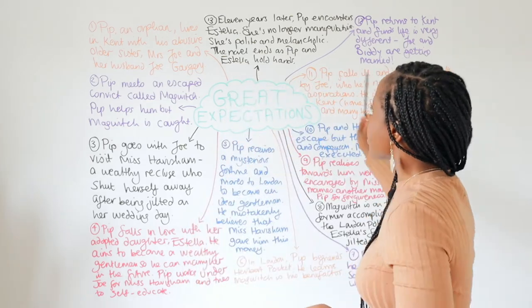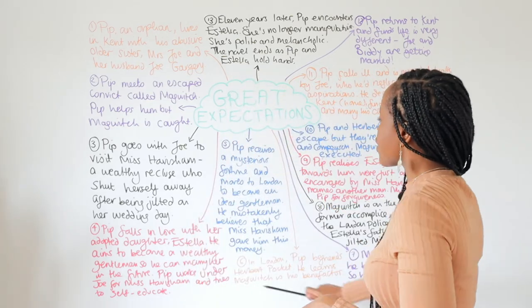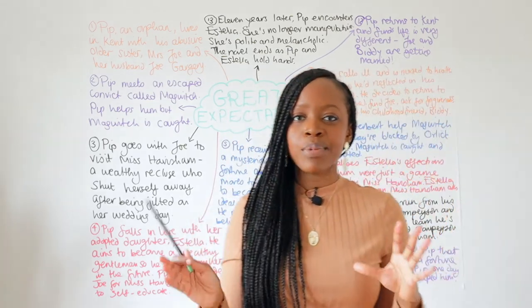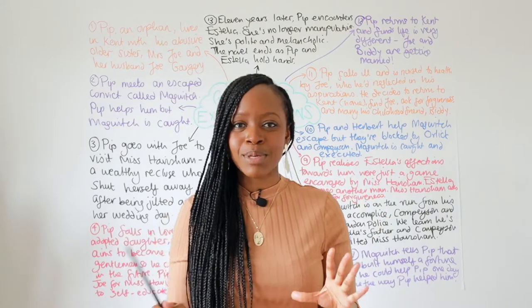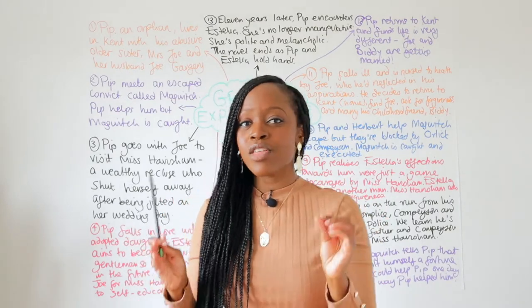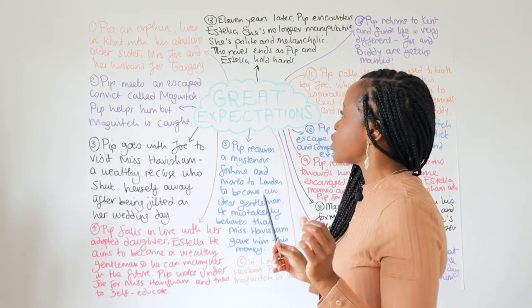As you can see, I chart in 13 steps everything that happens in Great Expectations. So let's begin with the opening of the story.